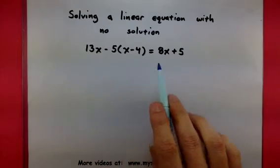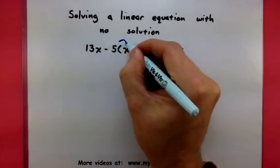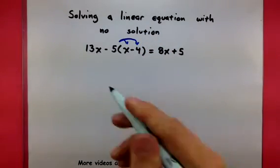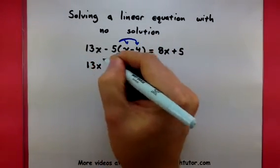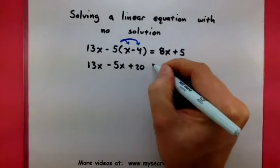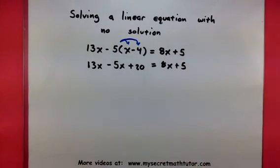So in a linear equation, I want to work to get my x's together. And I'm going to start by factoring in this negative 5. So it'll give me 13x minus 5x plus 20. All right, things look normal so far, so we'll continue.